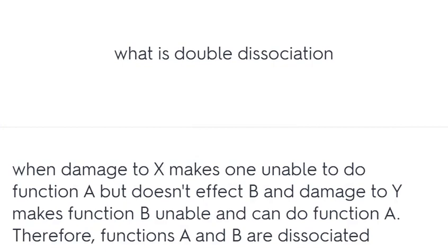What is double dissociation? When damage to X makes one unable to do function A but doesn't affect B, and damage to Y makes function B unable while function A is preserved. Therefore functions A and B are dissociated.